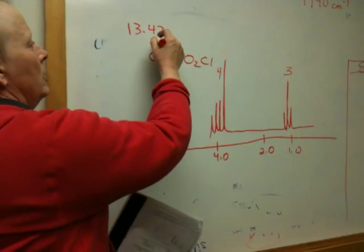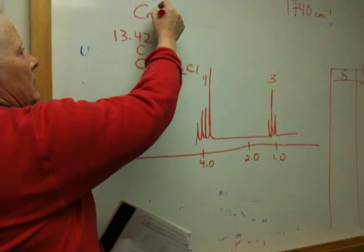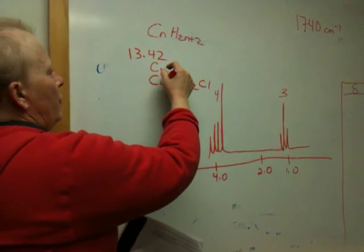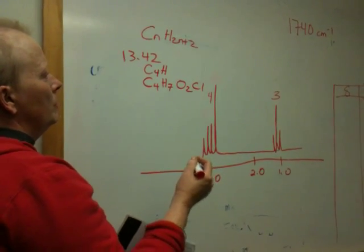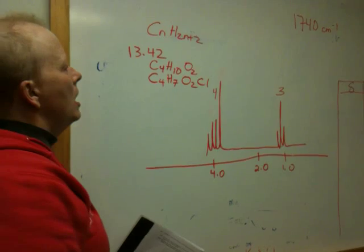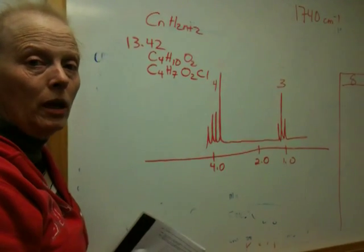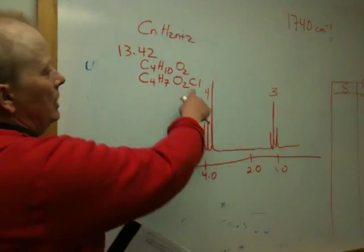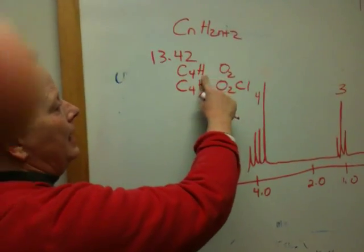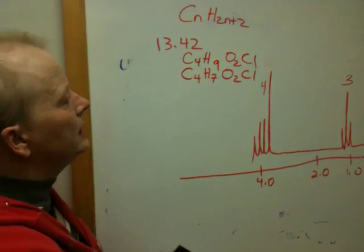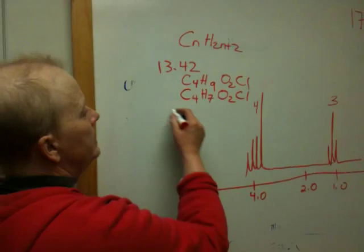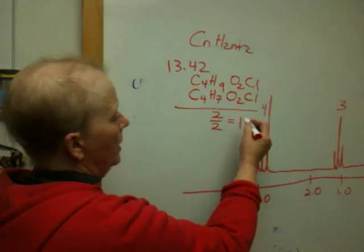First of all, doing the unsaturation number, you would say CnH2n plus 2. So it would be C4H2n plus 2 would be 10. We know oxygen does not change the number of hydrogens in the saturated formula. We proved that in class. Halogen, however, does. And if you'll recall, halogen reduces it by one. So it's C4H9O2Cl. Chlorine brings the number of hydrogens down by one because chlorine acts like a hydrogen. The difference here is 2 divided by 2, which equals 1.